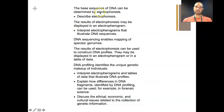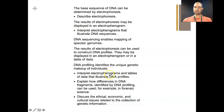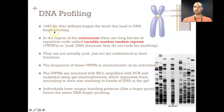So this is what we're going to cover. The sequence of DNA can be determined by electrophoresis. Electrophoresis can be displayed in an electropherogram. DNA sequencing enables mapping of a species' genomes. We can construct DNA profiles from those, and DNA profiles can identify the unique genetic makeup of individuals. So interpreting the electropherograms, explaining how differences in DNA fragments can be used in forensic science, and discussing ethical, economic, and cultural issues.